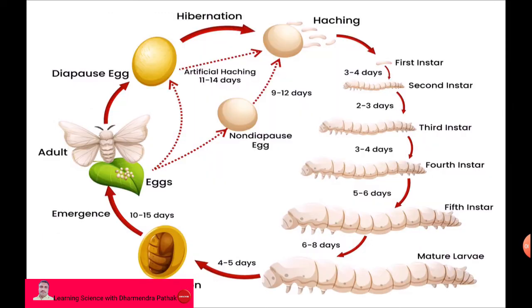The timeline of the life cycle: eggs hatch into larva after 11 to 14 days. The first instar lasts 3 to 4 days, the second instar 2 to 3 days, the third instar 3 to 4 days, and the fifth instar about 5 to 6 days, with 6 to 8 days in the fifth instar before changing into a cocoon in 4 to 5 days — a process called pupation. After that, the pupa changes into an adult in 10 to 15 days.